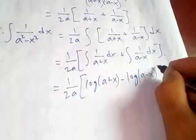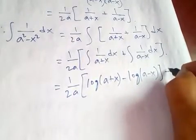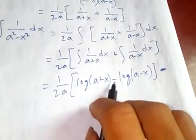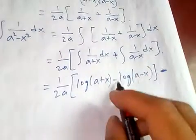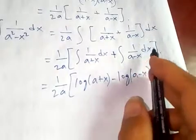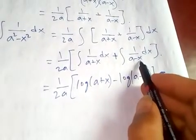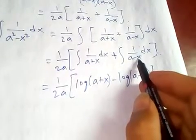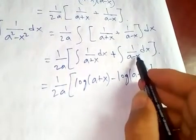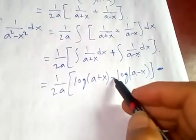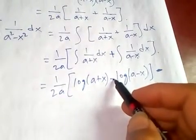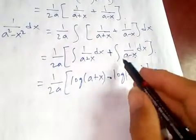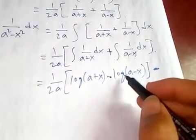How come there's a minus here when it's positive there? Since we integrate with respect to x, but here x is negative, so in order to equate these two we take a negative.